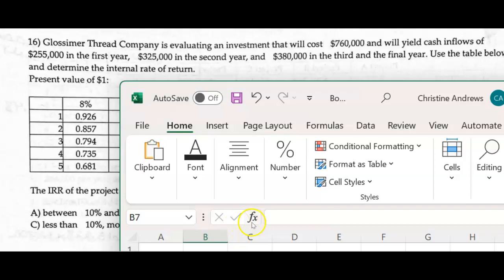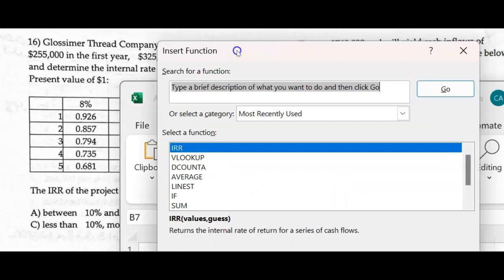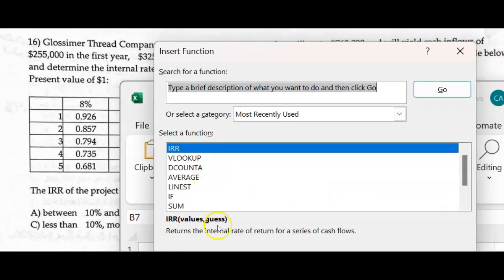And then if we take, let's look for the internal rate of return, the IRR function. So the function that it comes up with is the internal rate of return, and it just gives you back the internal rate of return for a series of cash flows.